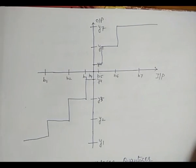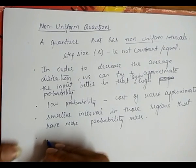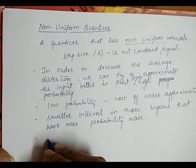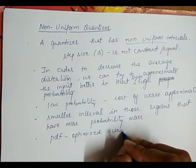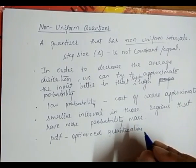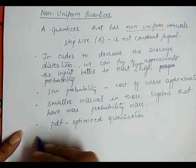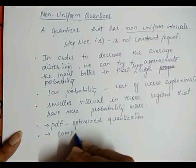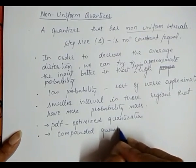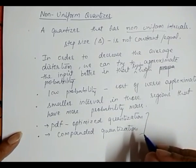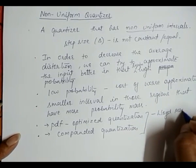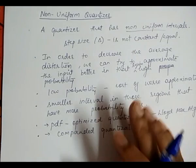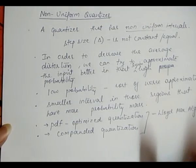For designing the non-uniform quantizer in more detail, you can approach it through two headings. One is PDF-optimized quantization, and the second is companded quantization. These are the two approaches used for designing the non-uniform quantizer. In the PDF-optimized quantizer, we use the Lloyd-Max algorithm to implement this non-uniform quantizer. I hope you understand the basic concept of the non-uniform quantizer.